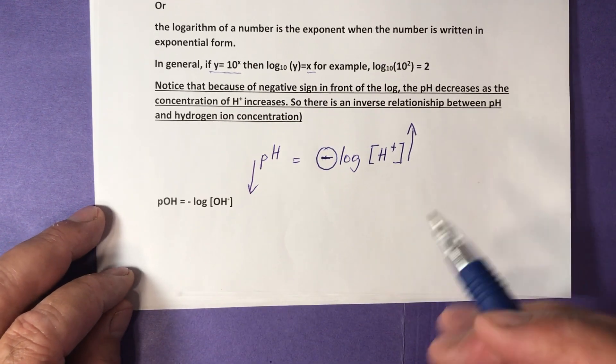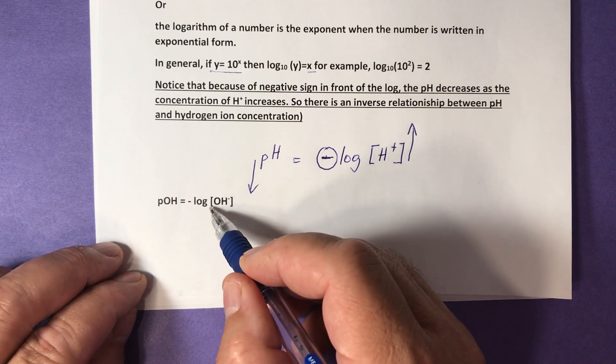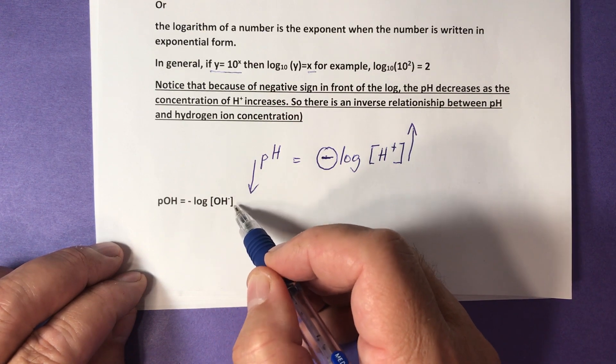The same way we can find the formula for pOH, which is negative log of OH minus concentration.